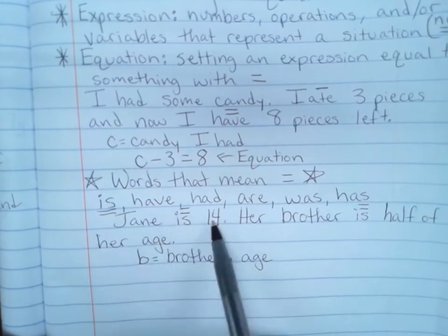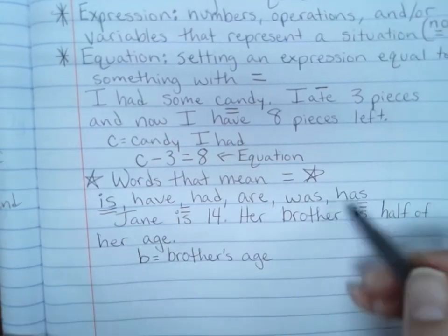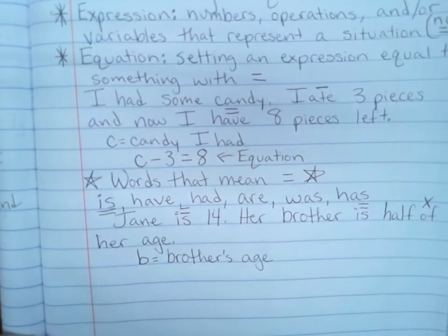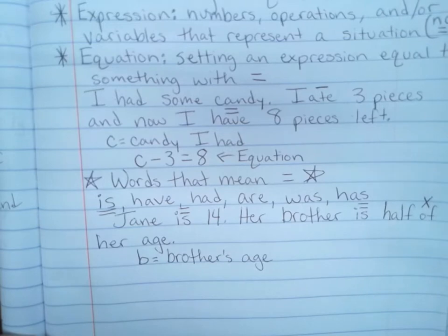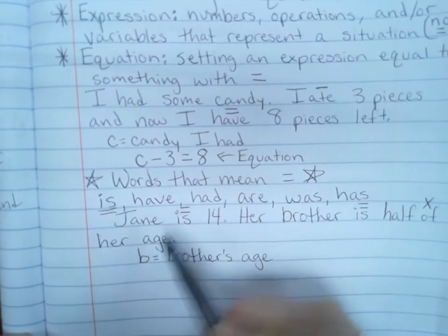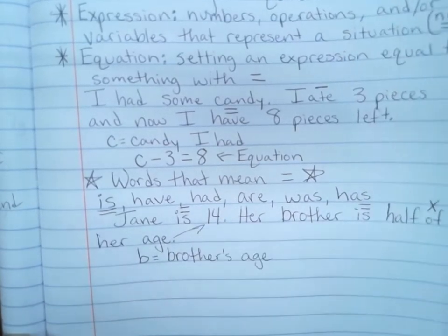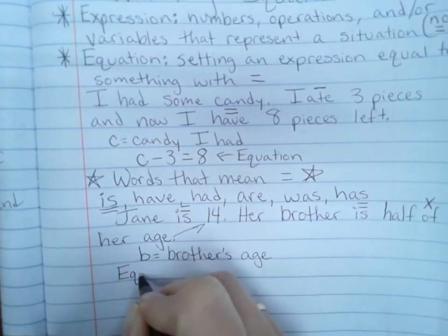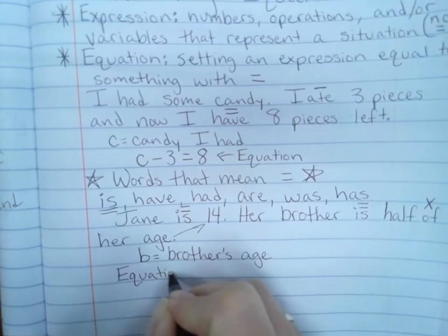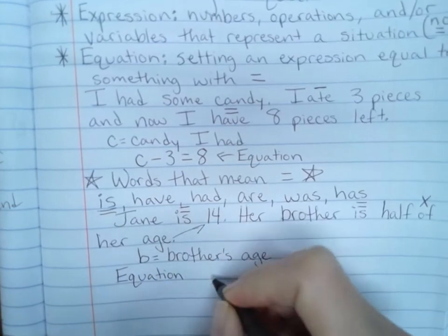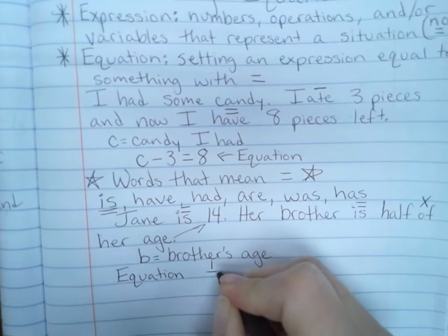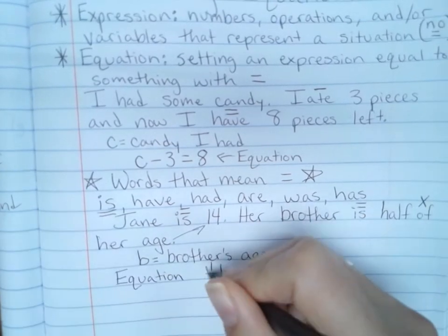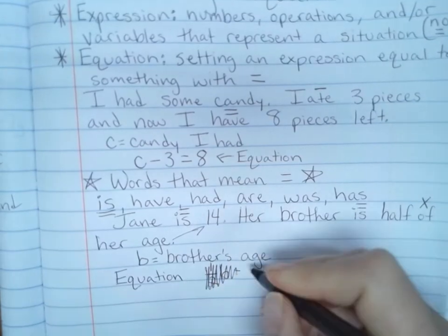So Jane is 14, so we know how old Jane is. Half of, of is a multiplication, or because I'm talking about half I could think divide by two. We know Jane's age, it was given to us right here. So an equation to match this situation could be one half of her age, which we know is 14, equals B, her brother's age.